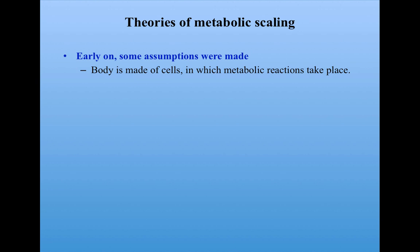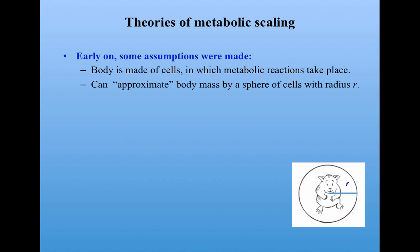Well, we know that the body is made of cells. Metabolic reactions, as I said, are constantly taking place. And as a simplifying assumption, scientists sometimes approximate body mass by assuming that the body is a sphere of cells with radius r. So here's our little hamster, who we're going to assume is a sphere of cells, and here's the radius r. So we're going to use some geometric arguments.